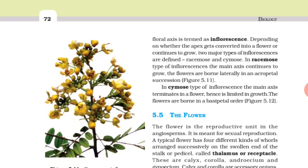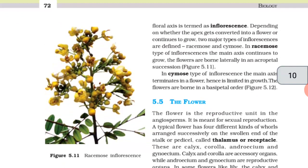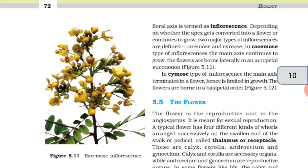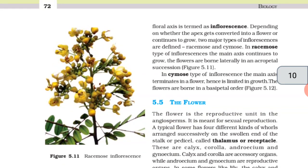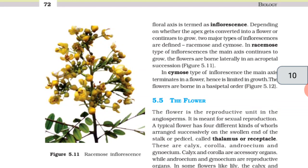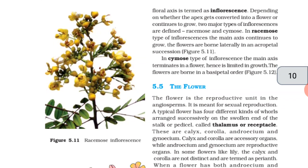The flower. The flower is the reproductive unit in the angiosperms. It is meant for sexual reproduction. A typical flower has four different kinds of whorls arranged successively on the swollen end of the stalk or pedicel called thalamus or receptacle. These are calyx, corolla, androecium and gynoecium. Calyx and corolla are accessory organs while androecium and gynoecium are reproductive organs.